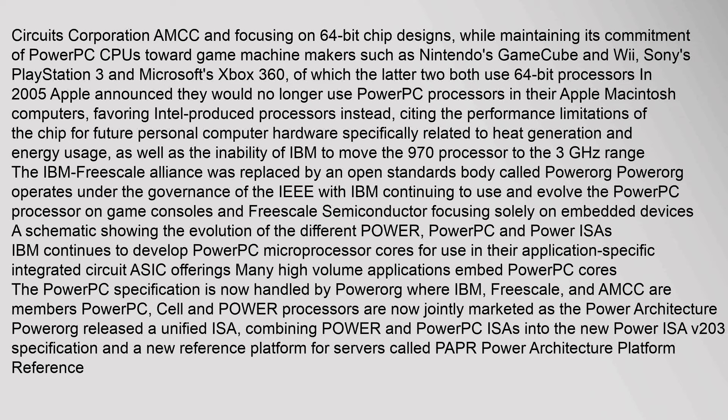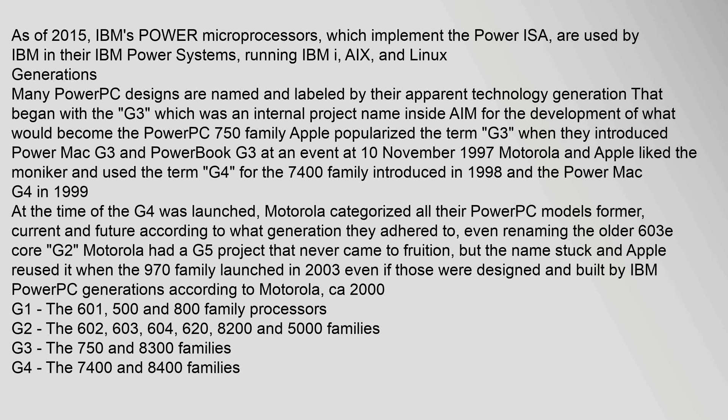As of 2015, IBM's Power microprocessors, which implement the Power ISA, are used by IBM in their IBM Power Systems, running IBM i, AIX, and Linux. Many PowerPC designs are named and labeled by their apparent technology generation, beginning with the G3, which was an internal project name inside AIM for the development of what would become the PowerPC 750 family.